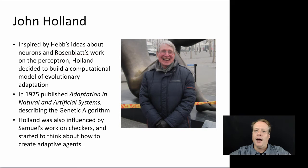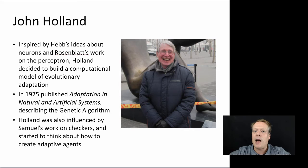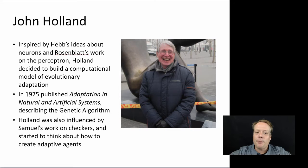John was inspired by Hebb's ideas about neurons and Rosenblatt's work on the perceptron — ideas about how you could think of the brain as a computational entity. Rosenblatt built the perceptron model, which was the foundational model for neural networks. And Hebb's 1949 Organization of Behavior laid the groundwork for thinking about how neurons might be used to structure a computational brain.